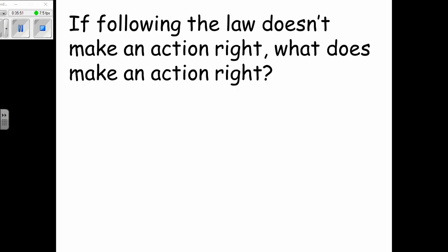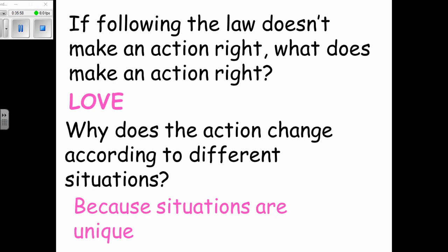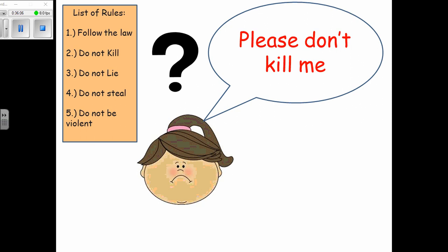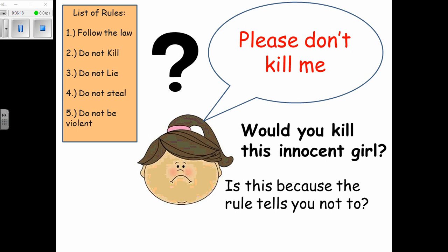If following the law doesn't make an action right, what does? Love. Why does the action change? Because situations are unique and different — you cannot have the same laws for every situation. In a situation where killing an innocent person is not loving, you won't do it, not because the rule says don't kill, but because it is not loving to kill in that situation.